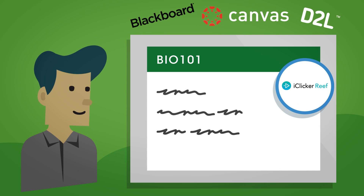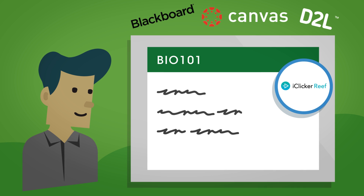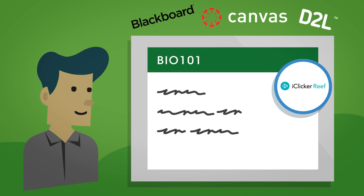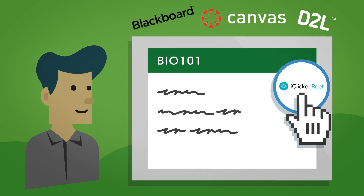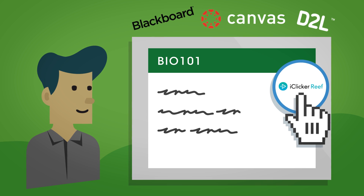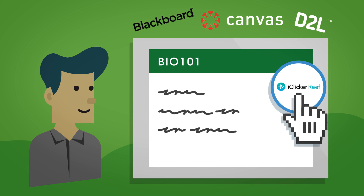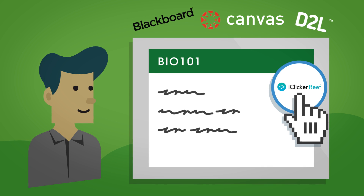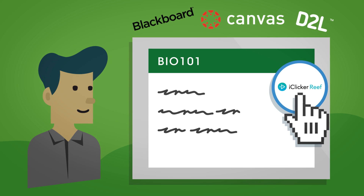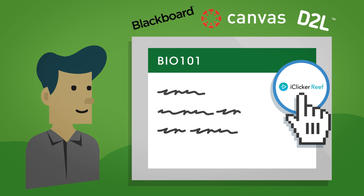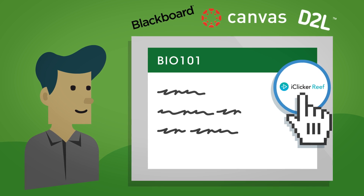There are a couple of different ways to get set up with Reef. Some instructors will set up a unique iClicker Reef link directly from the school's gradebook website. This link is especially created for your class and will help ensure your grades get counted correctly. If you already have a Reef account or joined Reef prior to receiving this link, don't worry — just click on the link and log in to your Reef account to match everything up.